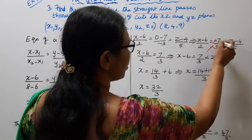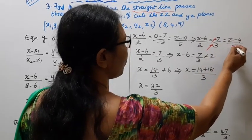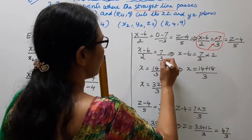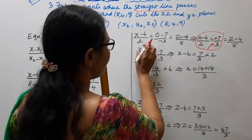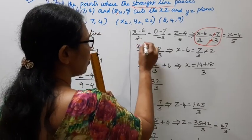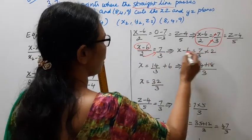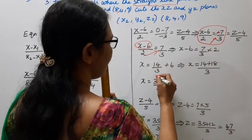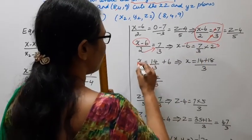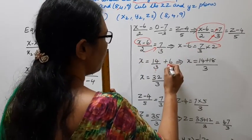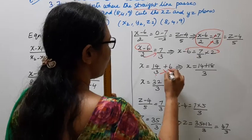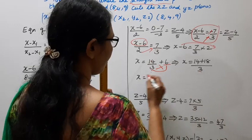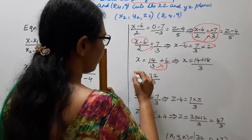From x minus 6 by 2 equal to 7 by 3: cross multiply to get x minus 6 equals 14 by 3, so x equals 14 by 3 plus 6, which is 14 by 3 plus 18 by 3, giving x equal to 32 by 3.